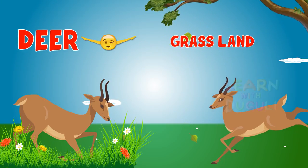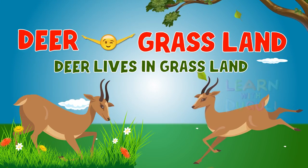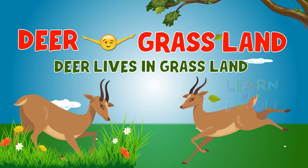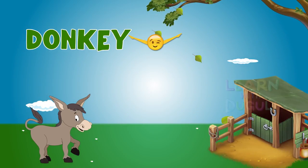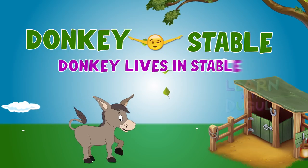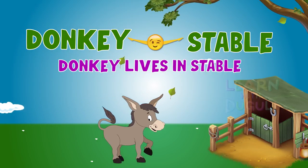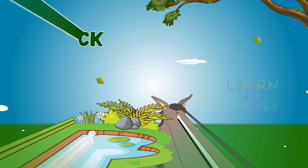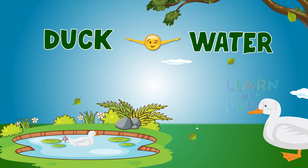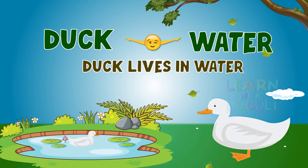Deer, Grassland. Deer lives in grassland. Donkey, Stable. Donkey lives in stable. Duck, Water. Duck lives in water.